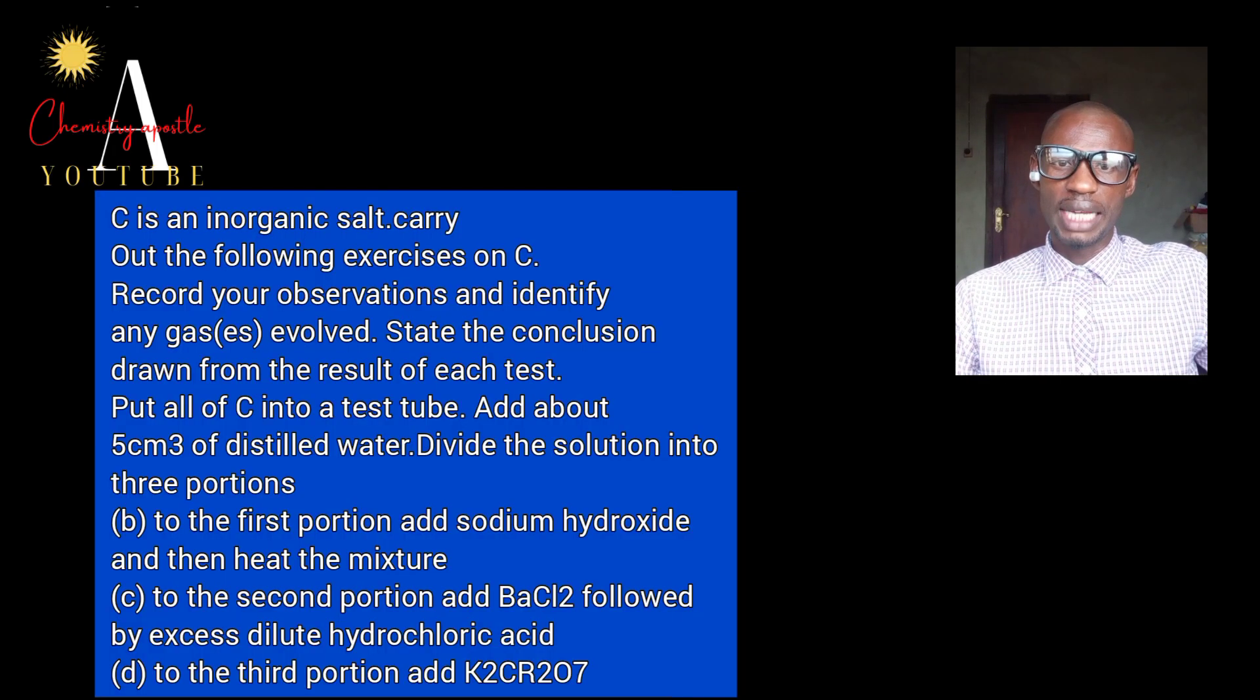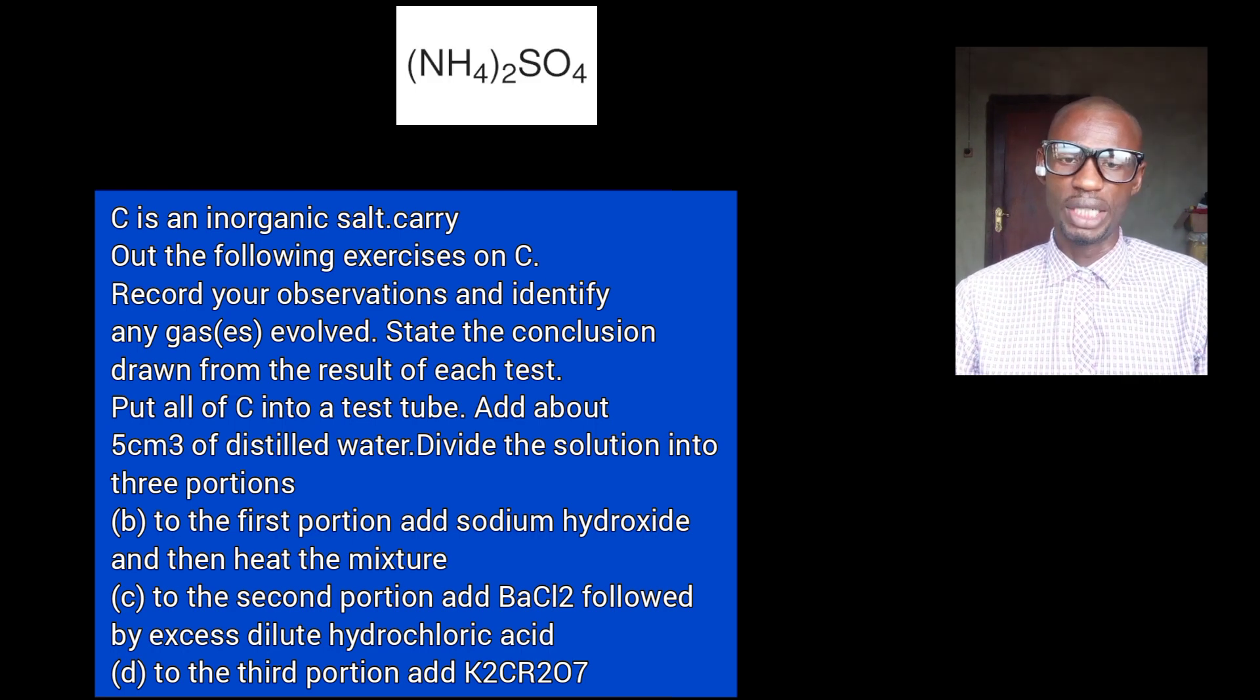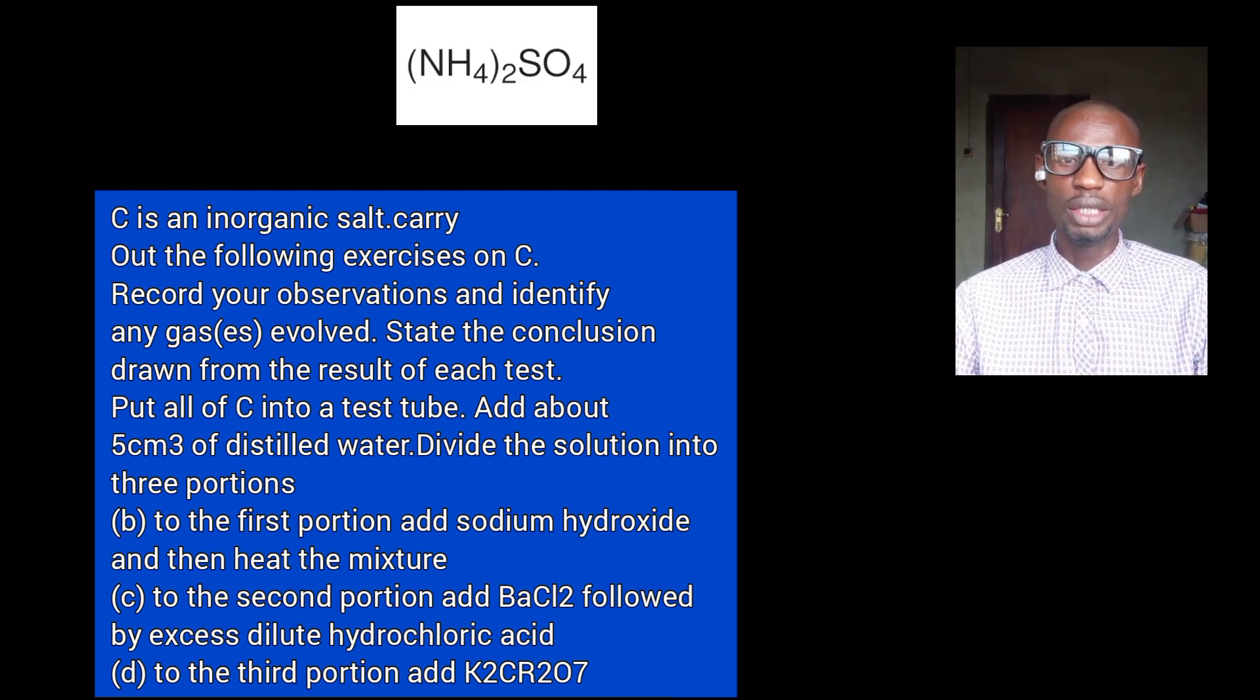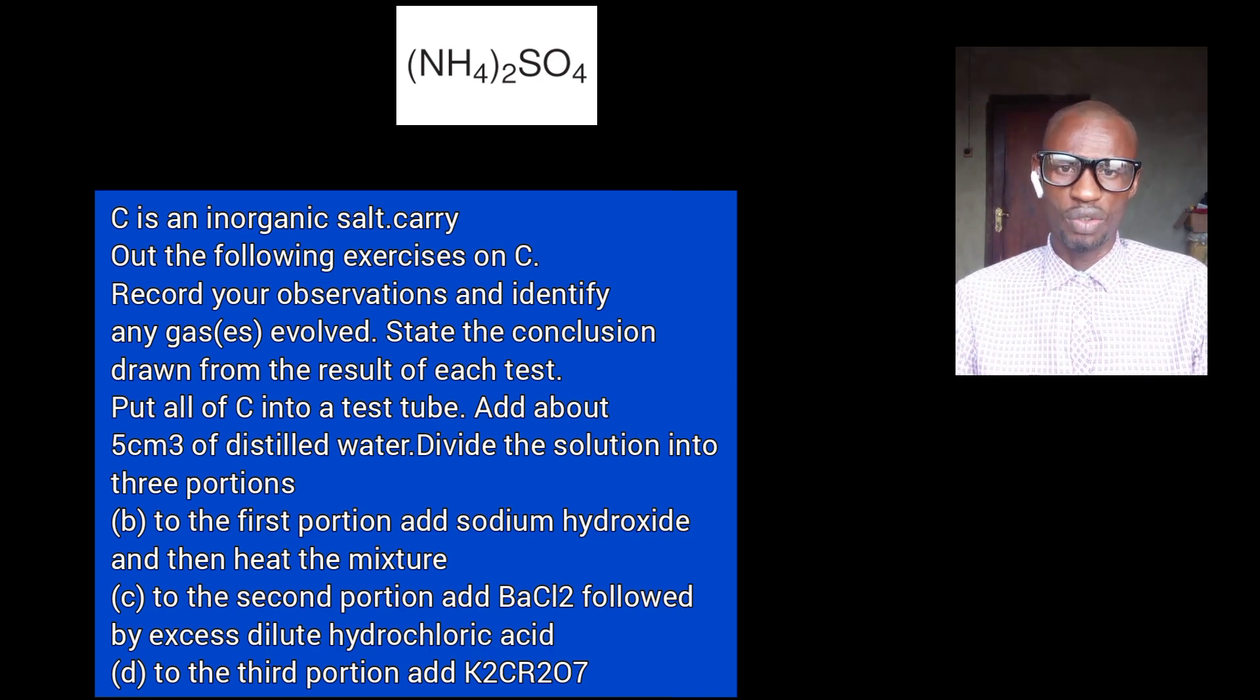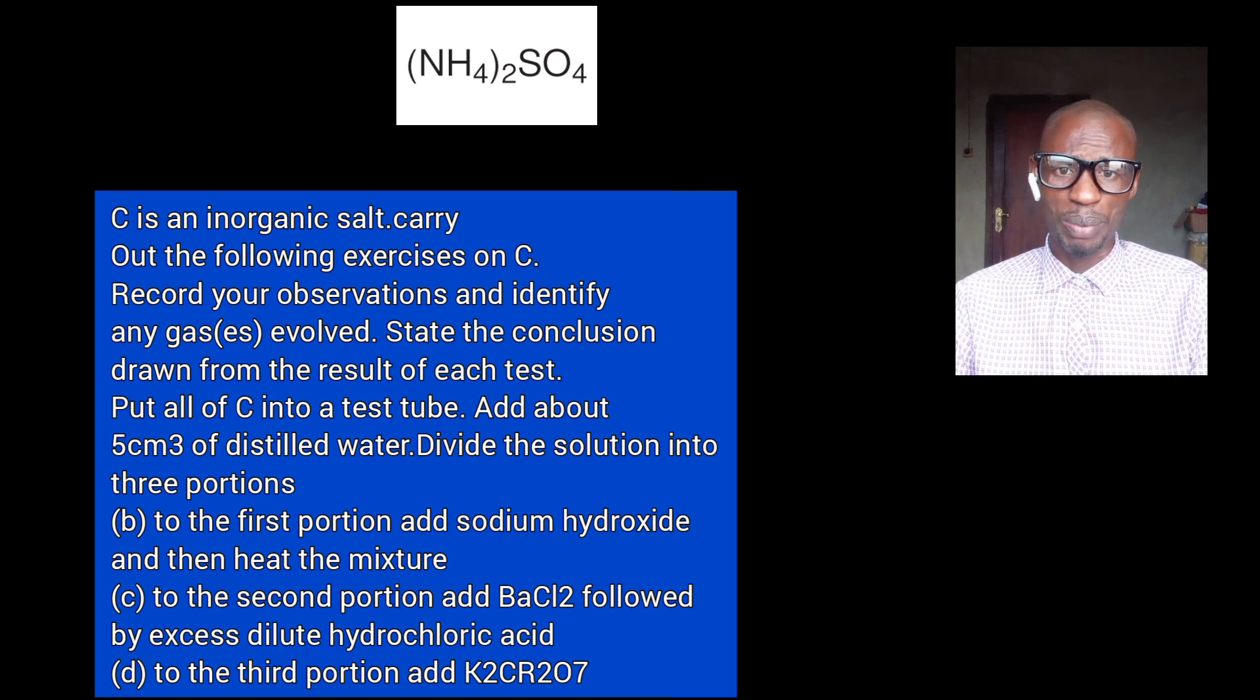We are going to carry out tests, observations and inference on the salt displayed on the screen there. In that salt, there are two ions present. We have ammonium ion and then we have SO4 2- ion. In the description below, I'm going to show how to confirm and test for ammonium ion. Now then, look at this salt. If you add water to that salt, naturally it's a soluble salt from the theory of practical. We are not going to be using reagents in this video because theory of practical is very, very crucial.